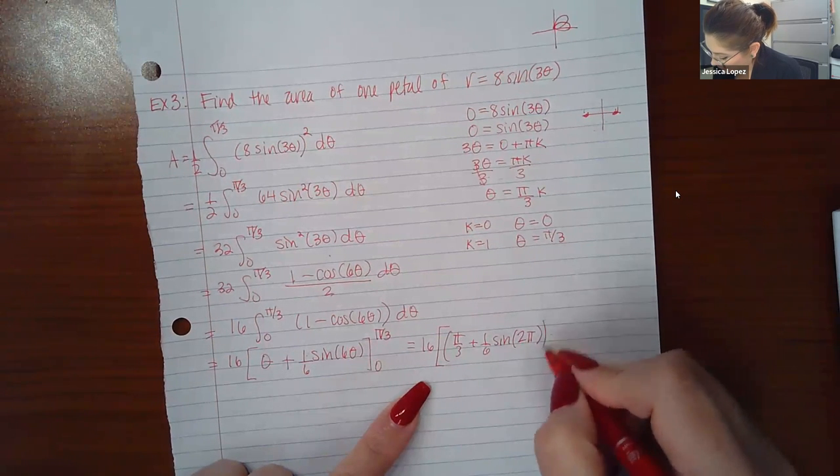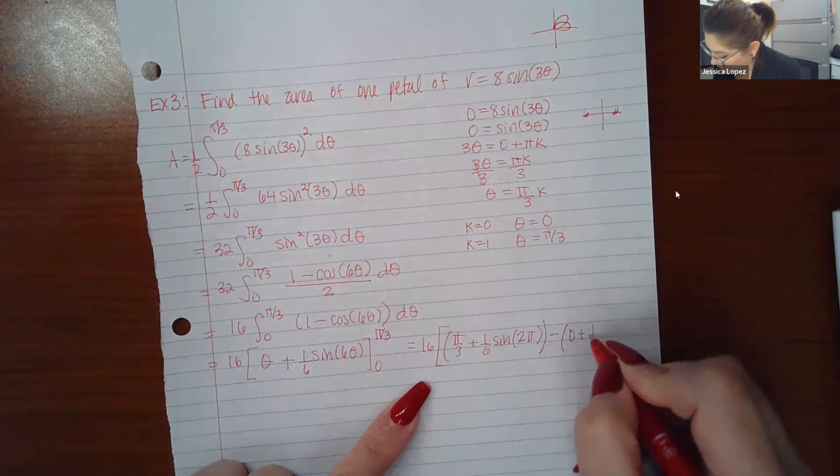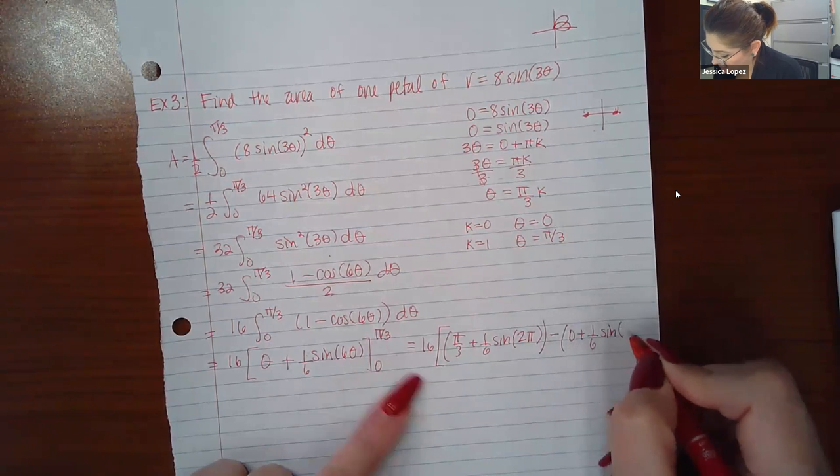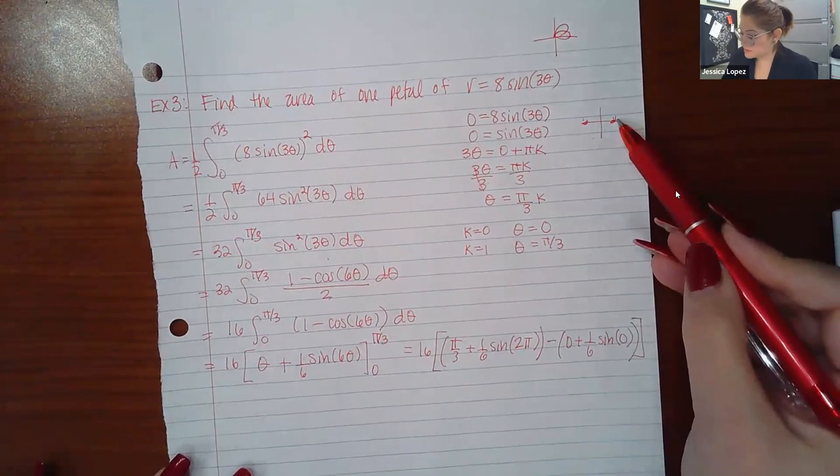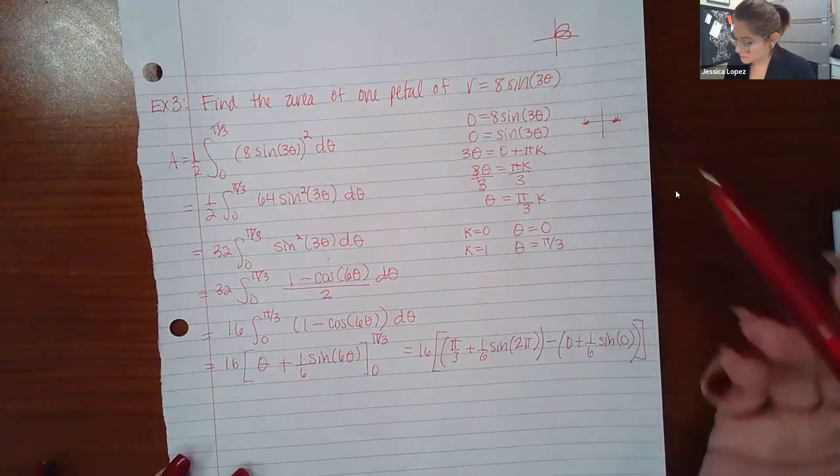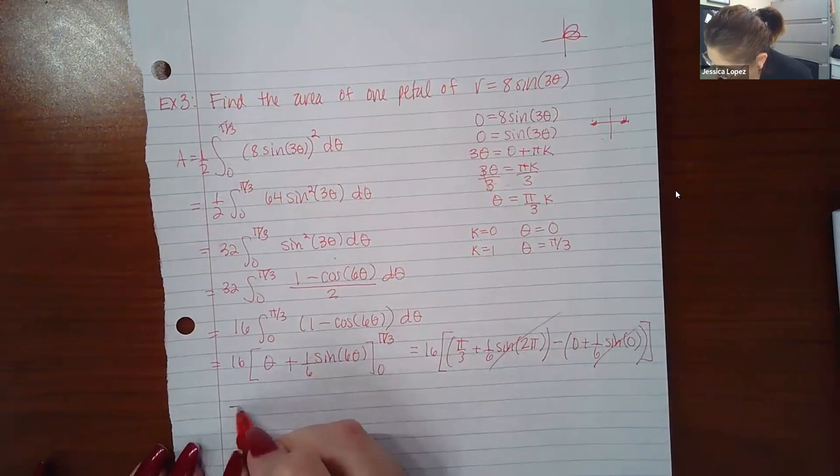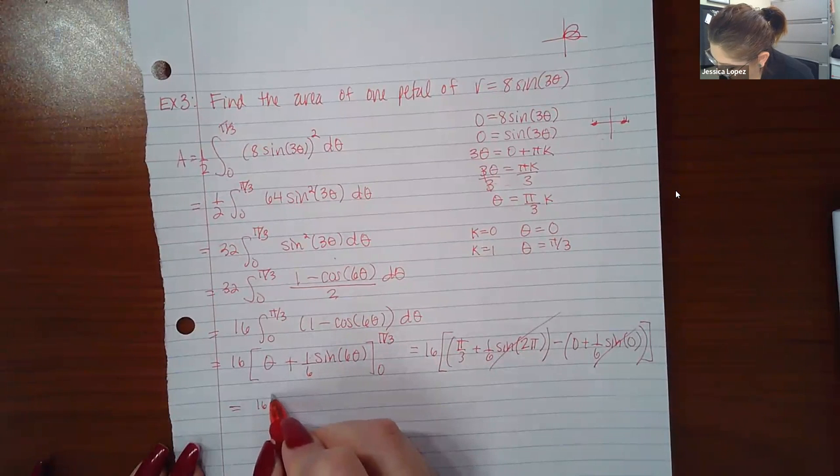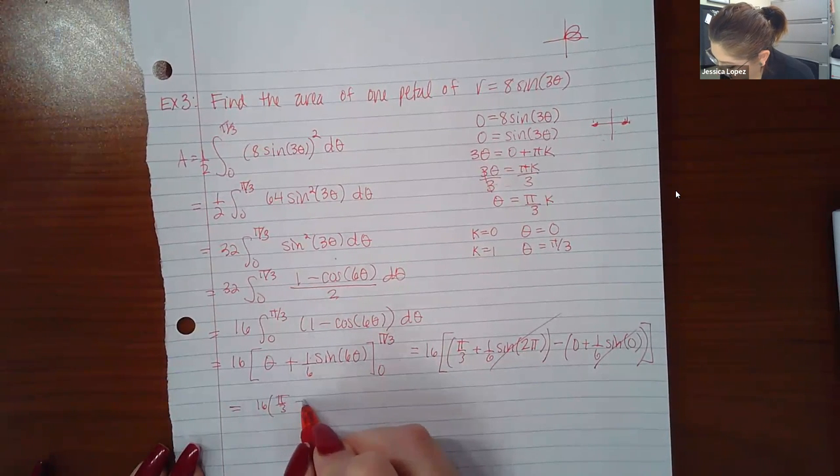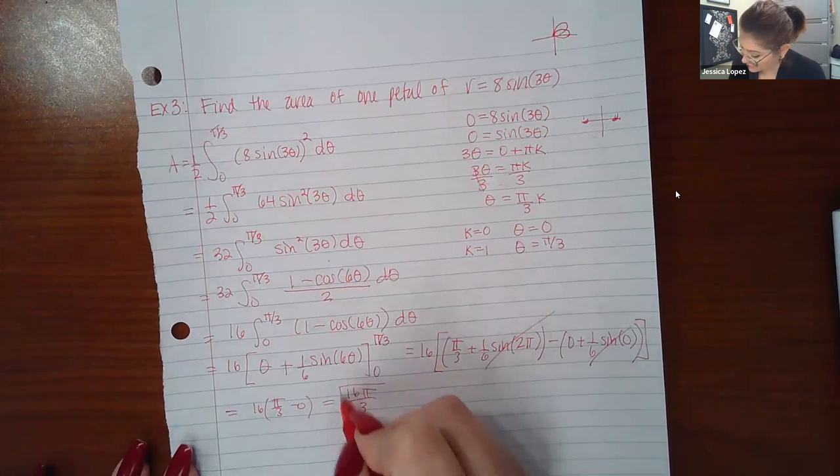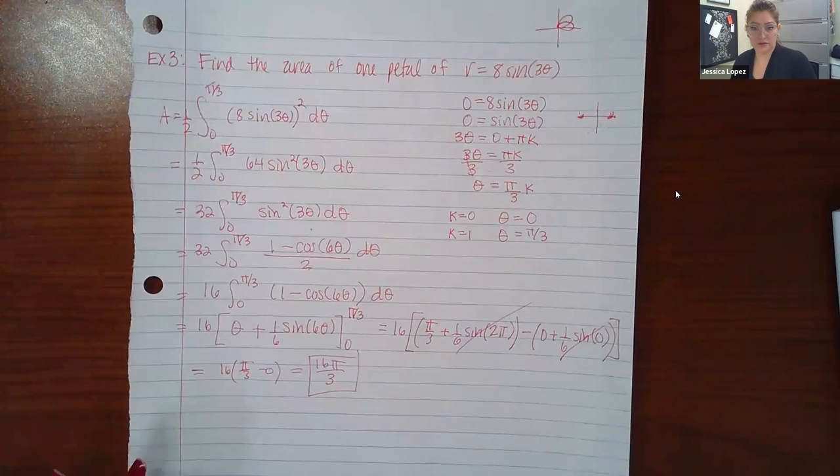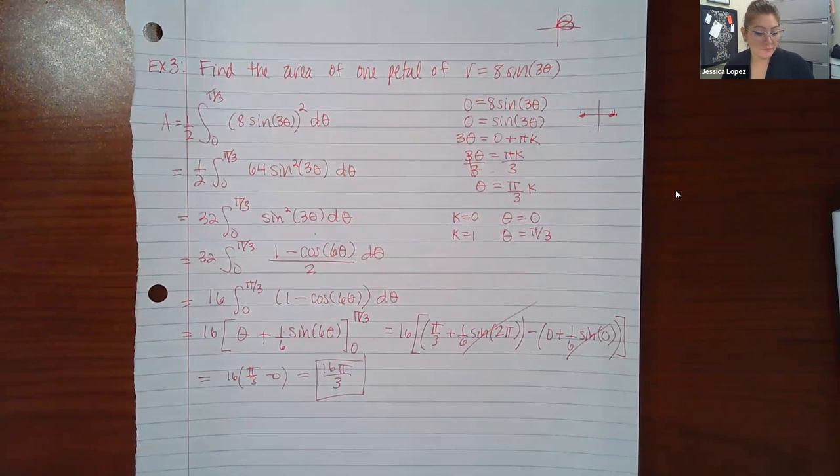Now remember the sine of zero is zero and the sine of two pi is zero. So these are gone. And I have 16 times pi over three minus zero, which is just 16 pi over three. And so this is the area of one petal.